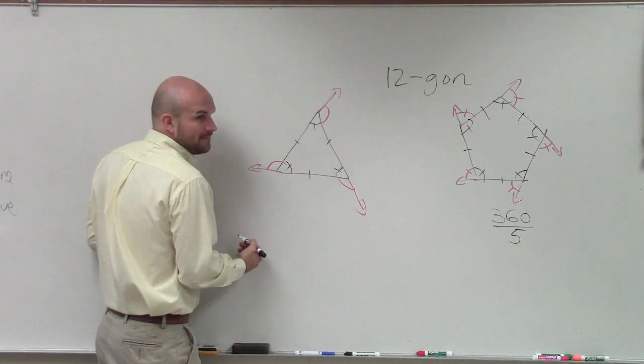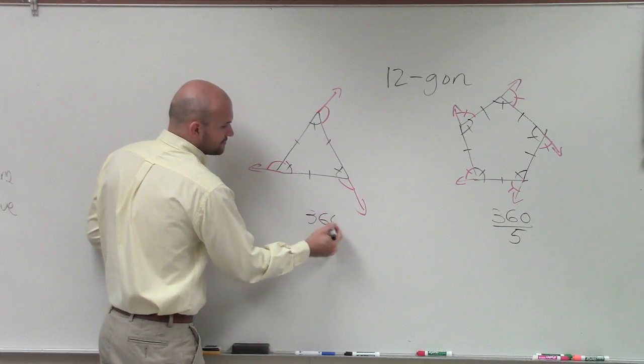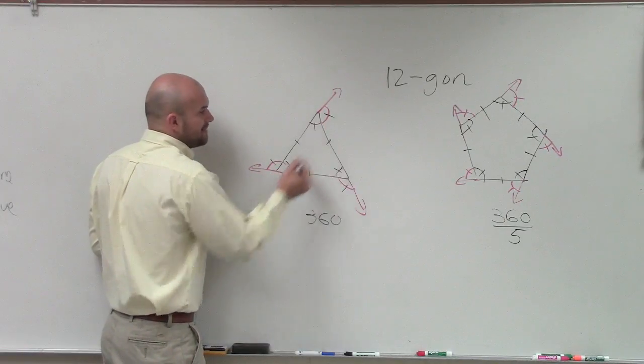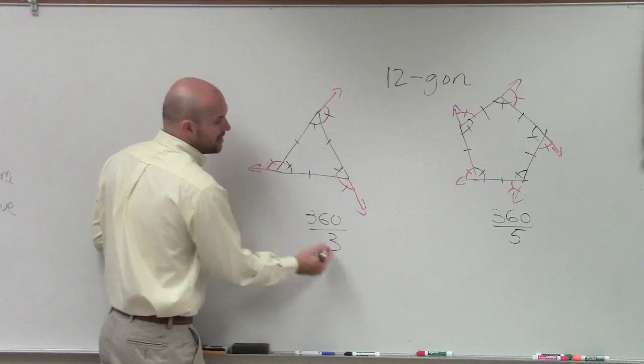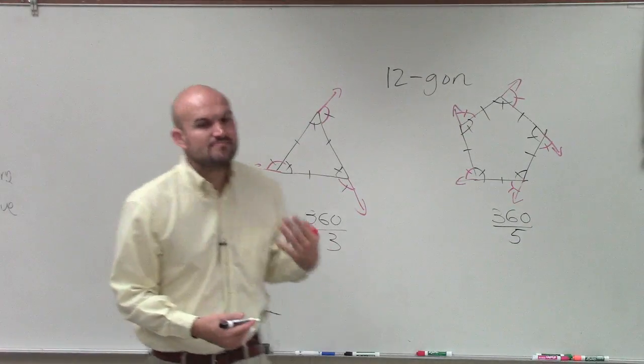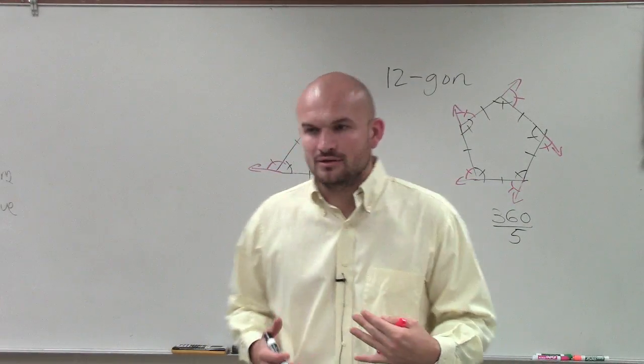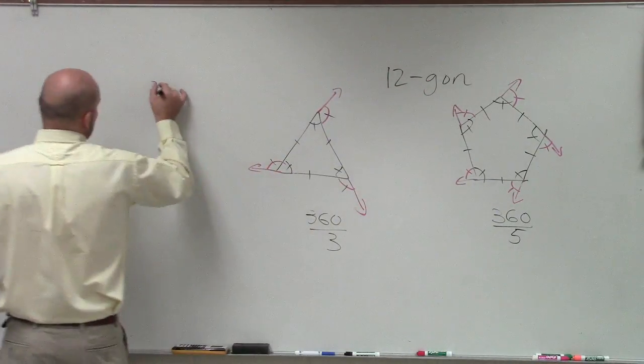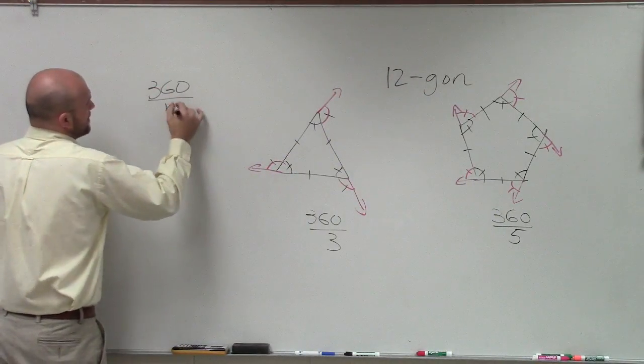Here I have a triangle. All of my exterior angles add up to what? 360. And then what am I going to split these all between? How many angles? Three. The number of sides. So if you want to find the measure of each exterior angle in a-gon, all you do is take 360 divided by n. Because 360 is the sum of all the exterior angles.